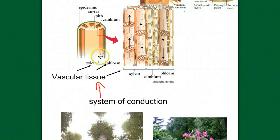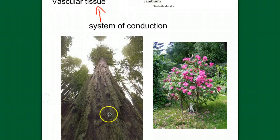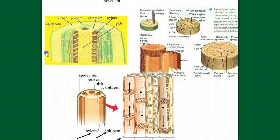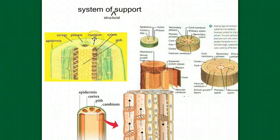Vascular tissue, namely xylem and phloem, is an internal system of piping or plumbing that allows plants to move materials great distances through their body in an efficient manner. This vascular tissue, this system of conduction, not only provides conduction, allowing the plant to move materials, but also is a system of structural support.